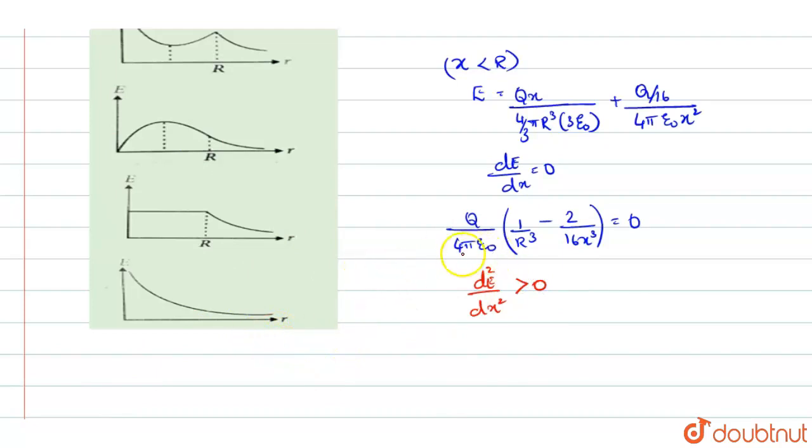And so, when you differentiate this once again, you will get it as 6 cube divided by 4 pi epsilon naught into 16 X power 4. This is greater than 0.